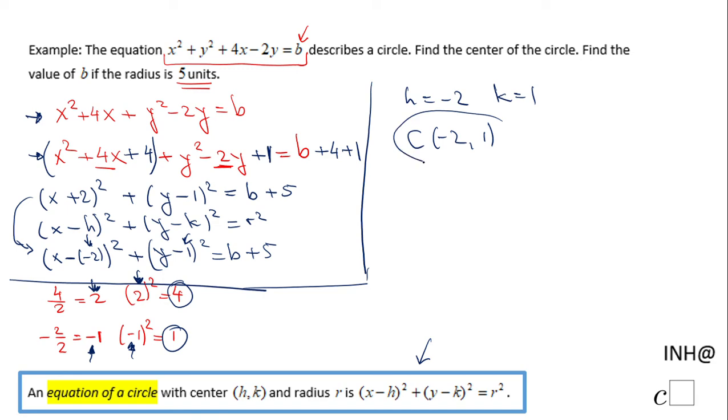And we have one more thing to find: B. Remember, the radius is 5, that is given to us. So the radius squared will be 5 squared, which means 25. At least 25 needs to equal B plus 5. So B + 5 = 25. We're finding B, just subtract 5, and B equals 20.